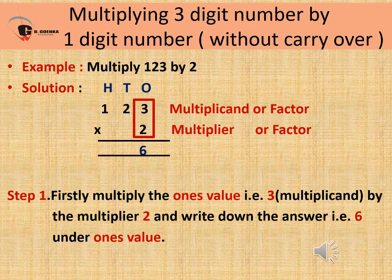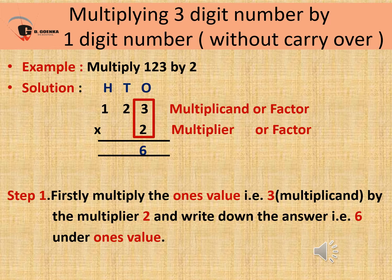Now let's understand multiplying a three digit number by a one digit number without carry over. Let's do it with the help of an example: multiply 123 by 2. First we align the sum under respective place values. 123 is our multiplicand and 2 is our multiplier, which are also known as factors. Step 1: multiply the ones value, that is 3 which is our multiplicand, by the multiplier 2, and write down the answer, which is 6, under the ones place.